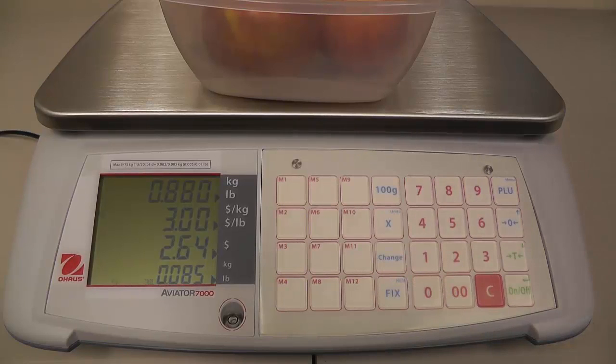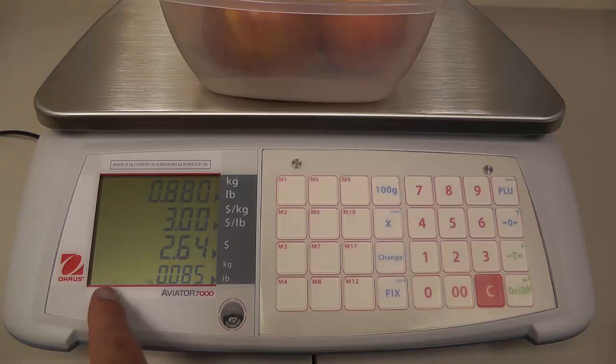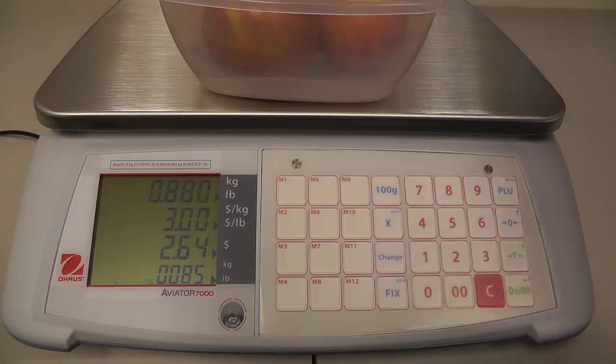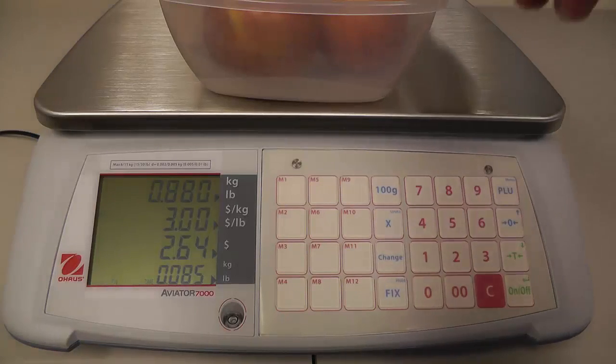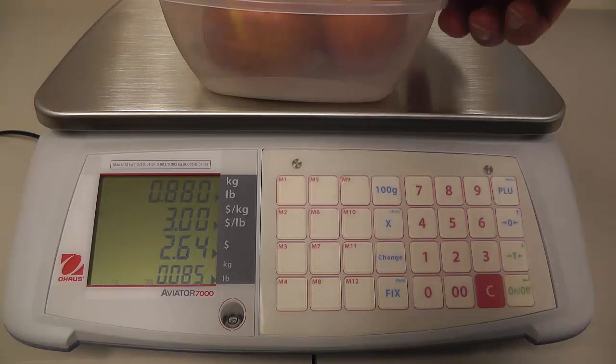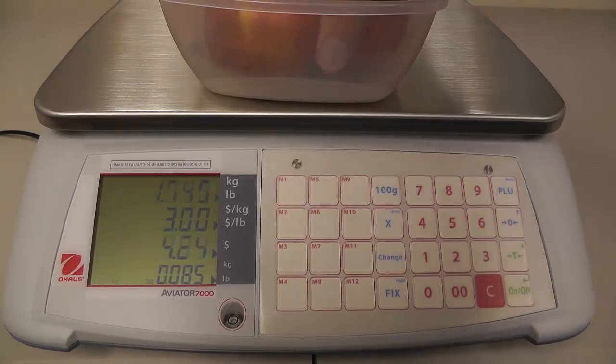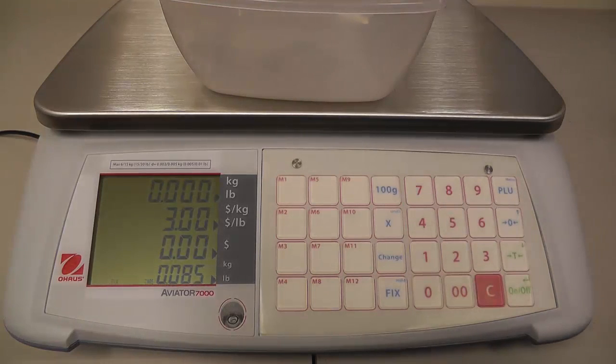It's very small print down here but it'll say fix. So now that's locked into the scale. Now when we take the apples out, notice the three dollars per pound stays in and you can see it on the display.